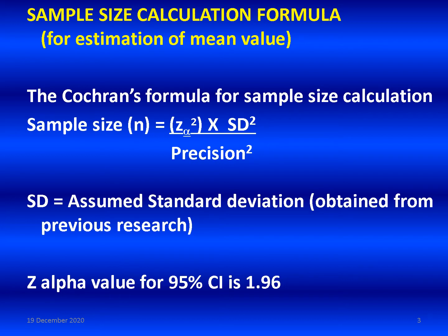Standard deviation is the assumed standard deviation obtained from previous research. We have to collect information from previous research: mean, standard deviation, and sample size. SD in this formula is the standard deviation from previous research. The Z alpha value for a 95% confidence interval is 1.96. One value remaining is precision, which we need to calculate.